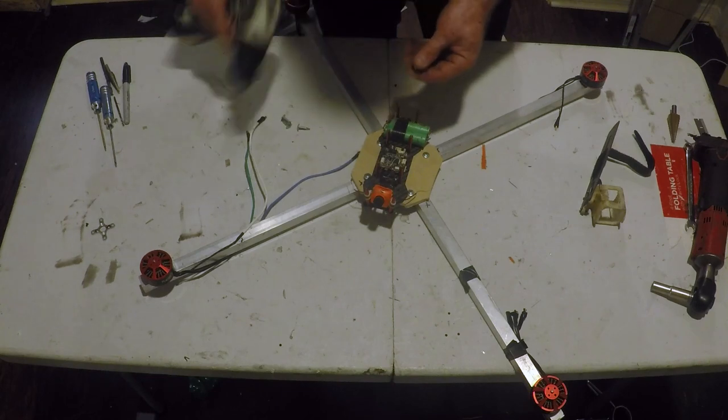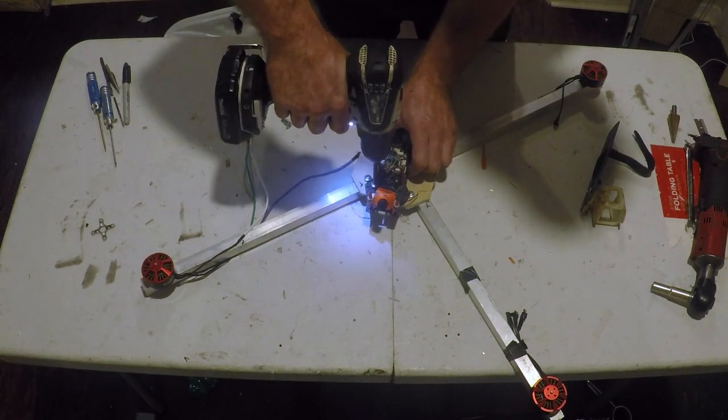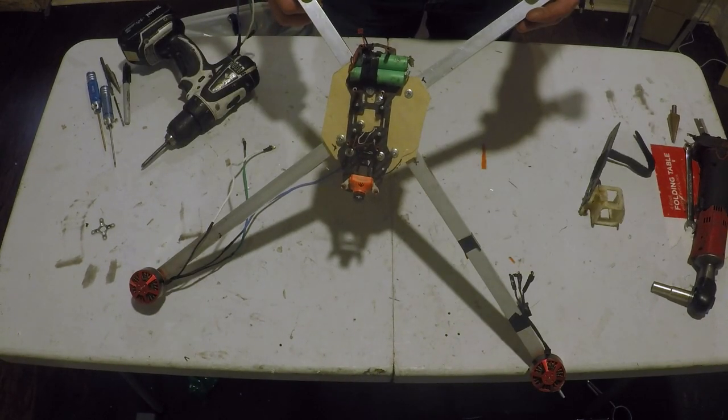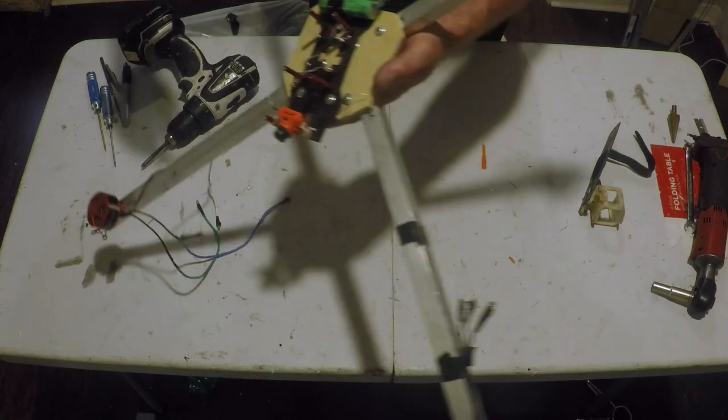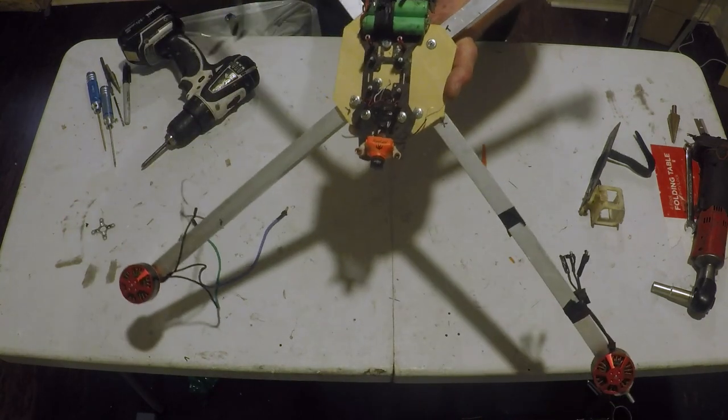So I just mount my electronics pack down on the frame with self-tapping screws again. What I found is making everything absolutely rigid and then using rubber soft mounts for your flight controller seems to give me the best results.